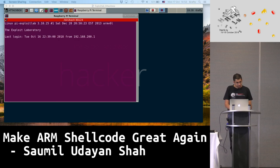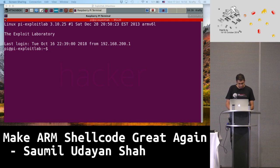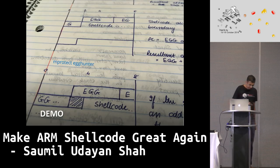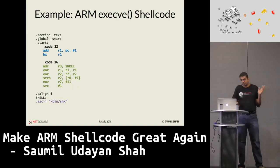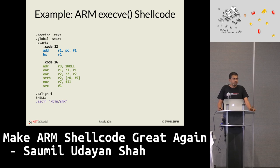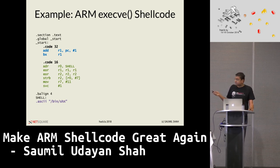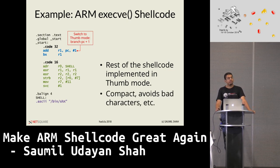I will now go on to the polyglot shellcode, which I'm sure is what you're really waiting for. For the polyglot shellcode, I want to set some context. We go back to the classic ARM shellcode diagram. The first part in shellcode anatomy is switching to thumb mode, and the rest of the shellcode is implemented in thumb mode — it's compact, avoids bad characters, and other things.